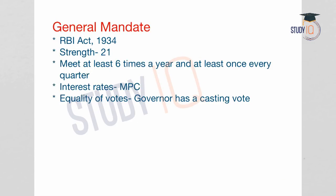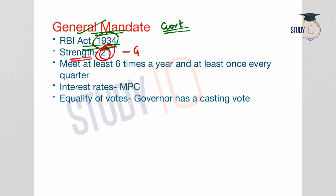Now let us move on to our topic. Let us first understand the general mandate of the board. The Central Board of Directors is appointed by the government in accordance with the RBI Act of 1934, which contains the provisions for the Central Board. The full strength of the board is 21, which includes the Governor of RBI plus a maximum of four Deputy Governors. The board is required to meet at least six times in a year and at least once in every quarter.